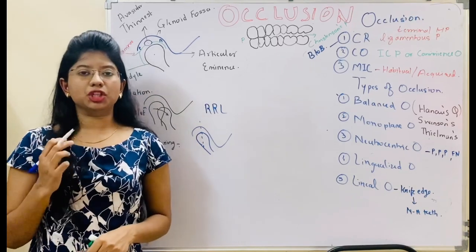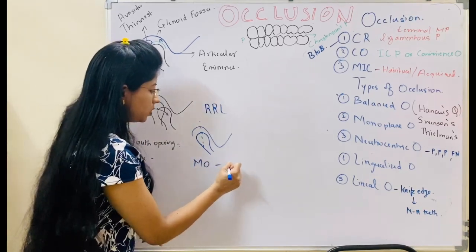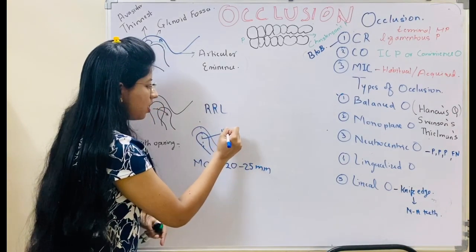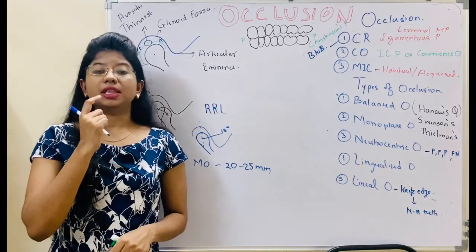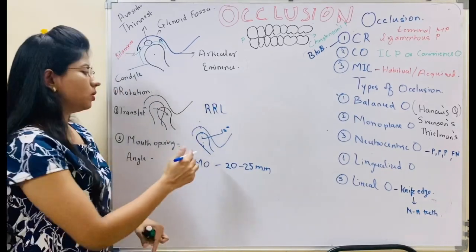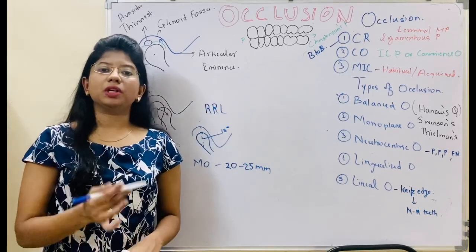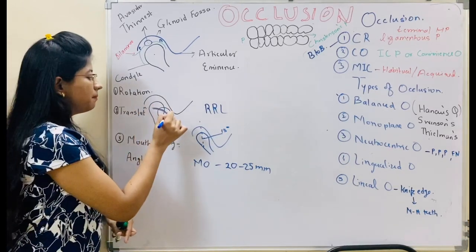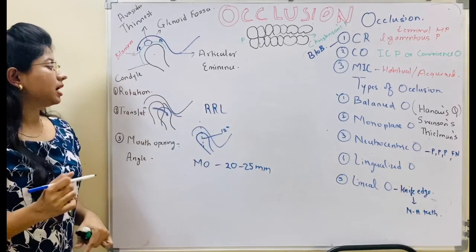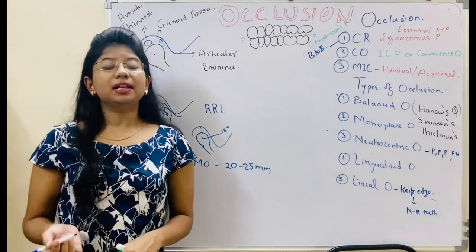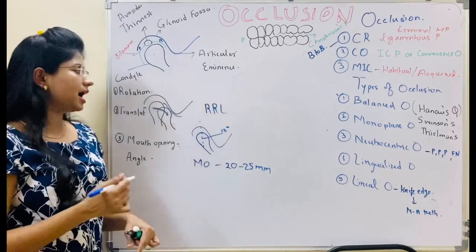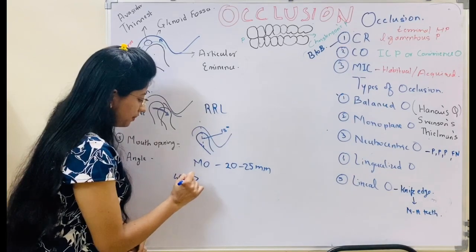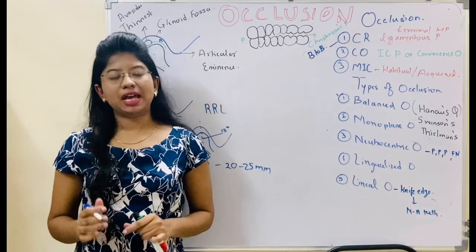There is hinge movement. When the mouth opening is about 20 to 25 mm, the rotation of the condyle occurs at 13 degrees — that much opening with 13 degrees of rotation is the hinge movement. But when the condyle changes its position by gliding along the path of the glenoid fossa, it is called translation, and this occurs beyond 40 mm.